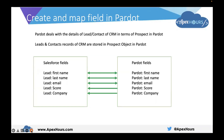We have standard fields on lead — first name, last name, email, company, score, and other fields. Similarly on contacts we have first name, last name, email, score, company, etc. These fields are mapped one-on-one with the prospect object fields: prospect first name, last name, email, score, company, etc. We can define the sync behavior or sync preference either from the Salesforce side or from the Pardot side. Data from CRM can be synced to Pardot and data from Pardot can also be synced to the CRM lead or contact object. This covers standard fields, and we can also map custom fields of lead and contact objects with prospect custom fields.